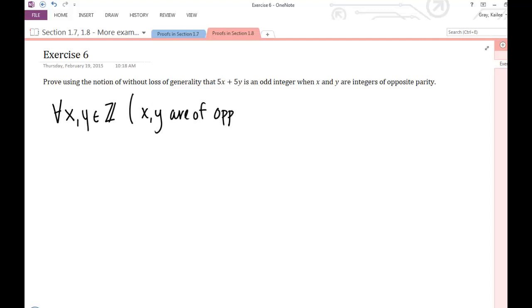and that just means that one is odd and the other is even, so they don't have the same parity. If they're both even or both odd, you have the same parity. Then 5x plus 5y is an odd integer.